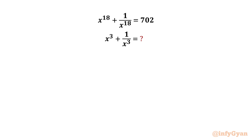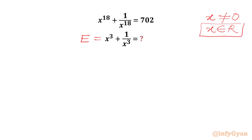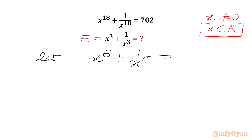Let's get started by writing the required expression equal to E. In the denominator we have x, so x cannot be 0. We are going to calculate when x belongs to real numbers, so we will reject all complex possibilities. I will consider our substitution straight away: let x power 6 plus 1 over x power 6 equal to t.